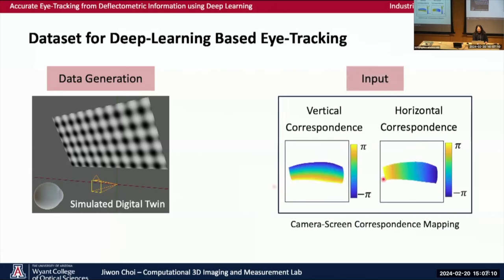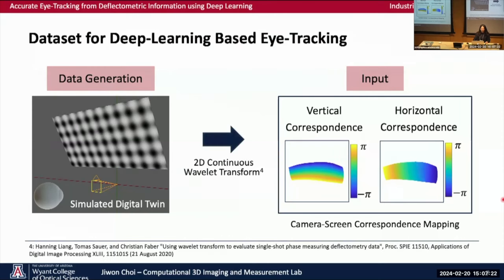Instead of intensity images, for the input to the neural network, we use vertical and horizontal correspondence maps, which are camera-screen correspondence maps obtained through 2D continuous wavelength transform. We chose to train on correspondence maps because it can prevent learning secondary features on the eye like wrinkles and veins.